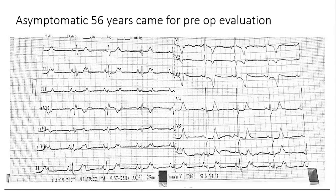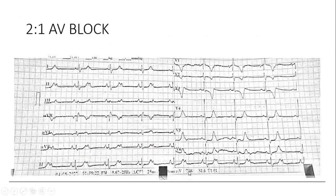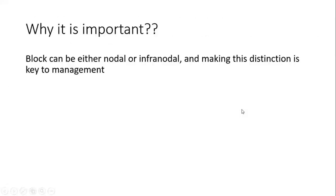He's asymptomatic. Does every infranodal conduction disease suggest that 2:1 block is infranodal, or can it be nodal as well? We have to look at the QRS complex — if the conduction is infrahisian then it's below the node. This is a 2:1 AV block. The P waves over here were not conducting — there was an alternate pattern. 2:1 AV block can be both nodal and infranodal.